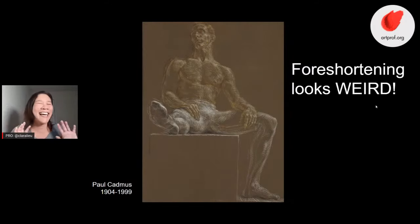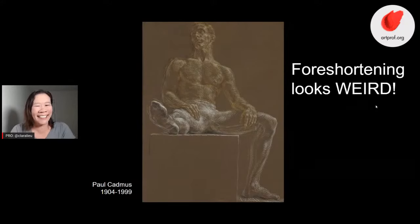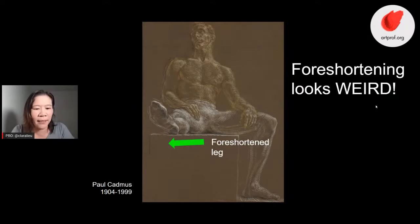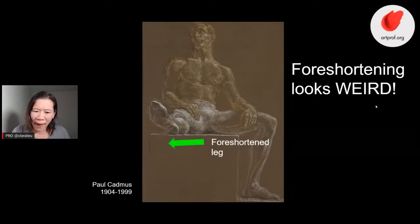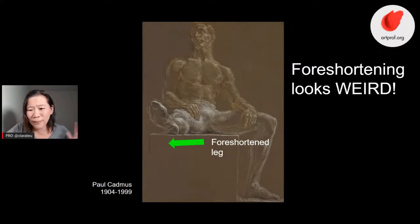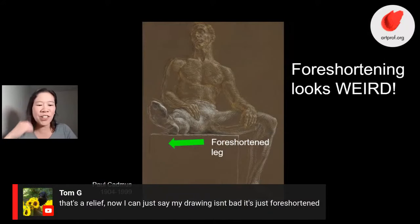So here we've got this leg that doesn't even look like it belongs in that body, especially when you look at the foreshortened leg compared to the leg on the right-hand side. It's just a really bizarre image. This is what I think — if Paul Cadmus can do these weirdo figures and make awesome drawings, it's totally cool with everybody. I like this comment from Tom G.: 'That's a relief. Now I can just say my drawing isn't bad — it's just foreshortened.' That's awesome. That reminds me of when my high school chemistry teacher would say his messy living room was just entropy. We've got our own excuse now — it's foreshortened.